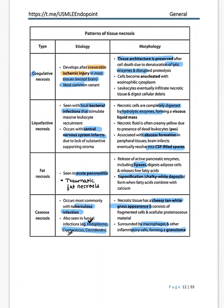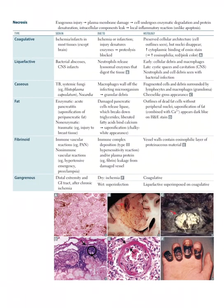The USMLE table summarizes necrosis types: coagulative necrosis is most common in solid organs except brain, shows ghost cells. Liquefactive necrosis seen in CNS infarct, brain abscess, with release of hydrolytic enzymes. Fat necrosis in acute pancreatitis and traumatic breast necrosis shows chalky white deposits. Caseous necrosis in TB and histoplasma — TB is type IV (delayed) hypersensitivity and forms granulomas; interferon gamma causes granuloma — gamma = granuloma.